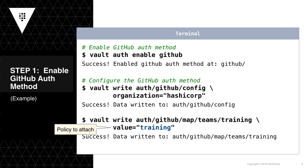Let's walk through an example where we'll enable the GitHub auth method and then create an entity and entity alias. In step one, we begin by enabling the GitHub auth method by running the command 'vault auth enable github'. Next, we configure the GitHub auth method, setting up the organization property to HashiCorp and completing the configuration by mapping the users and or teams within that GitHub organization to policies in Vault. In this case, the training team is mapped to the training policy.